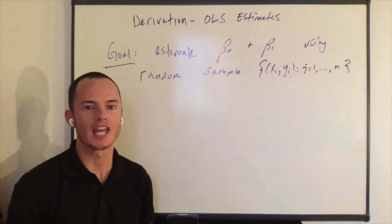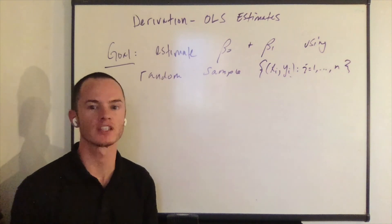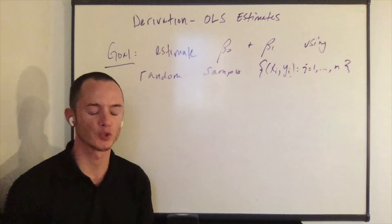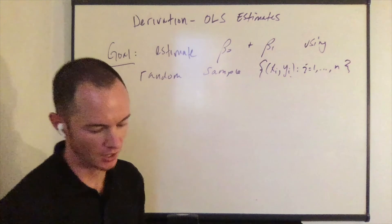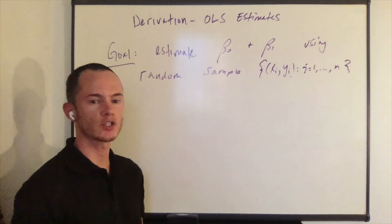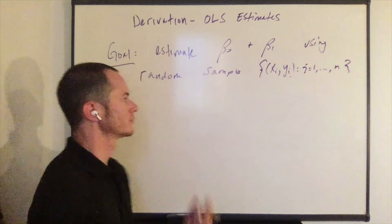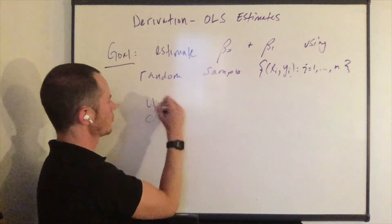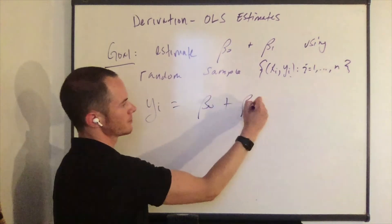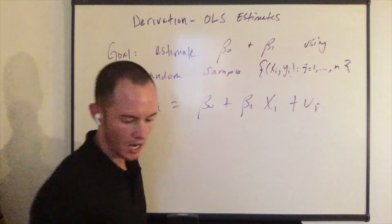Our goal is to estimate beta naught and beta one using a random sample of observations on x and y for observations i equals one through n. We can rewrite equation one, our simple regression model for observations i equals one through n. That is: y_i equals beta naught plus beta one times x_i plus u_i.